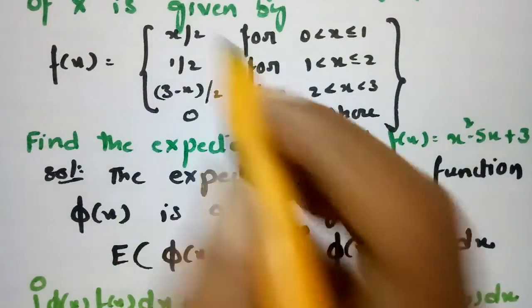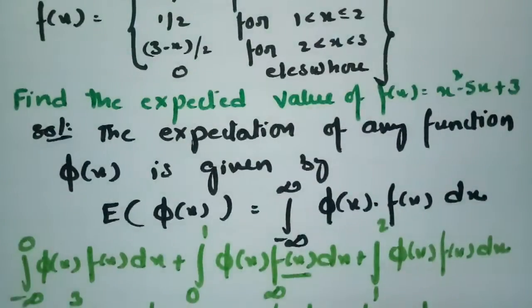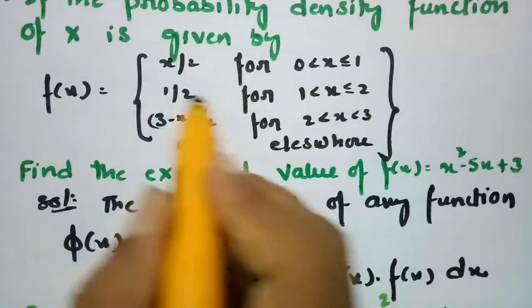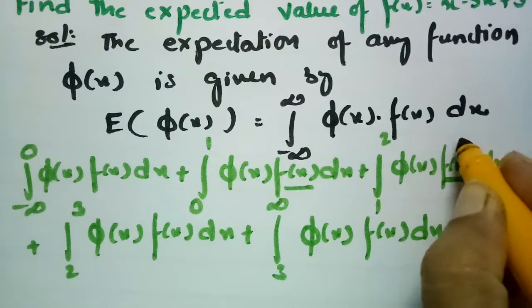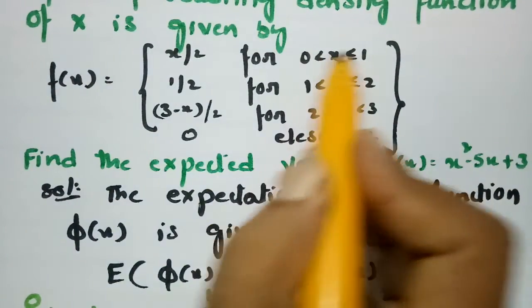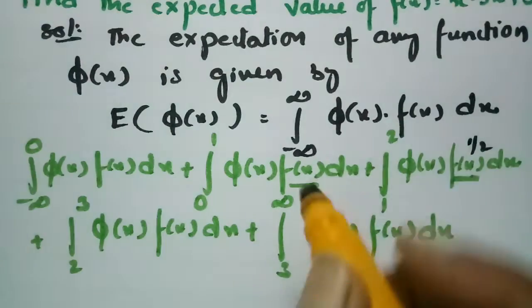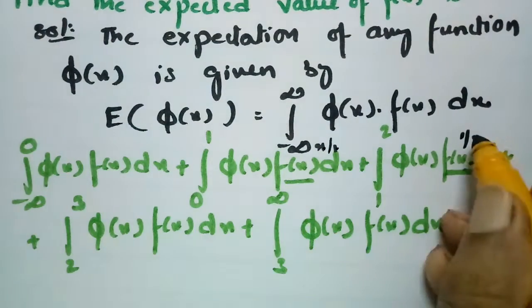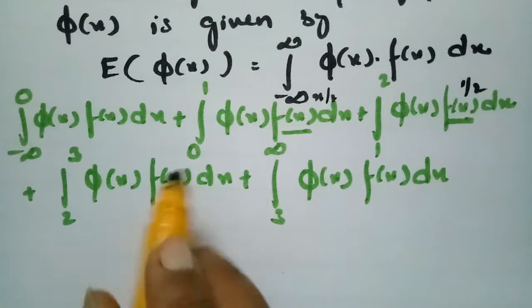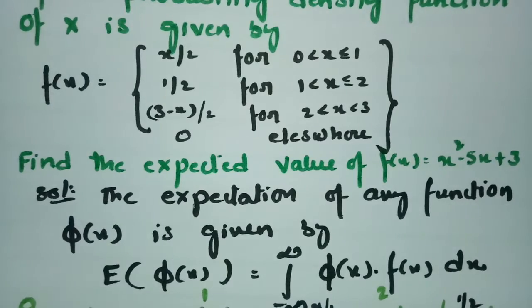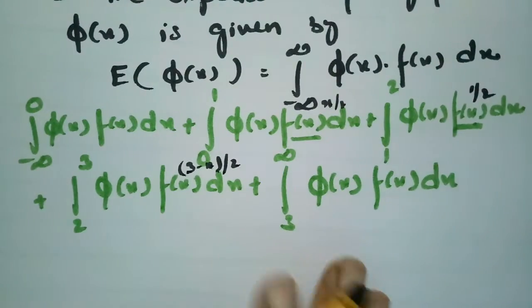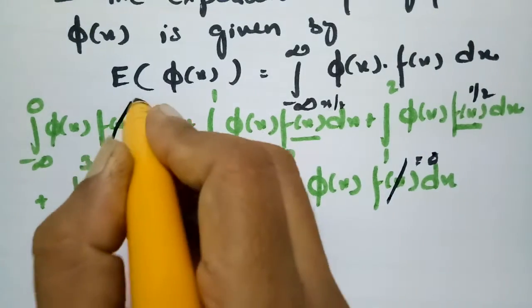Between 0 and 1, f(x) = x/2. Between 1 and 2, f(x) = 1/2. Between 2 and 3, f(x) = (3 - x)/2. For all remaining values of x, f(x) = 0, so the integrals over minus infinity to 0 and 3 to infinity vanish.